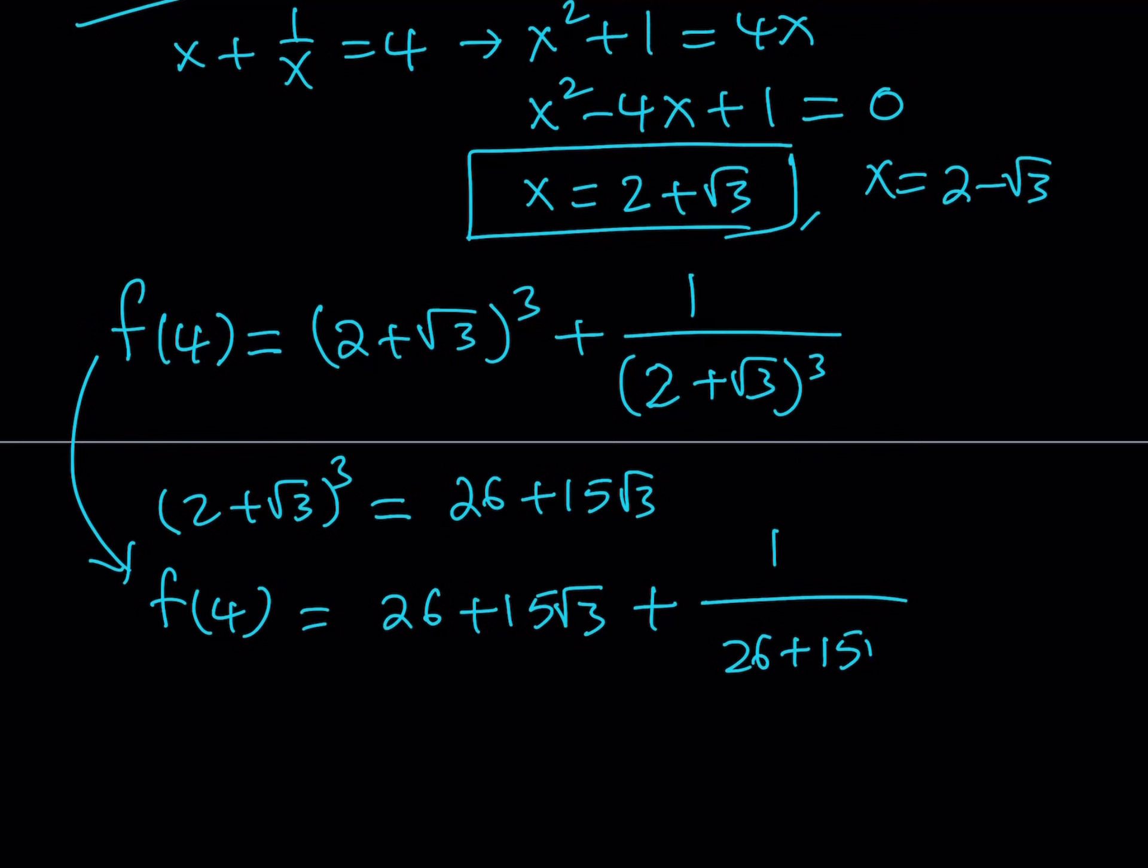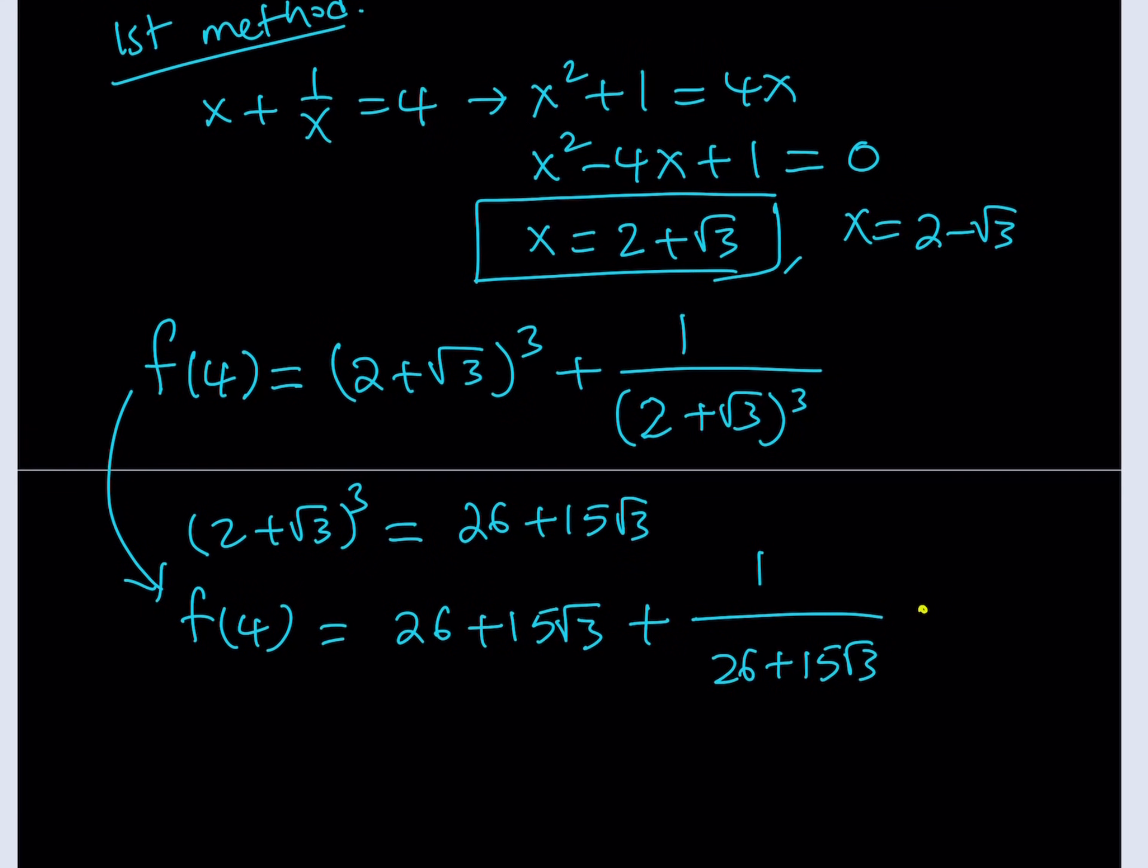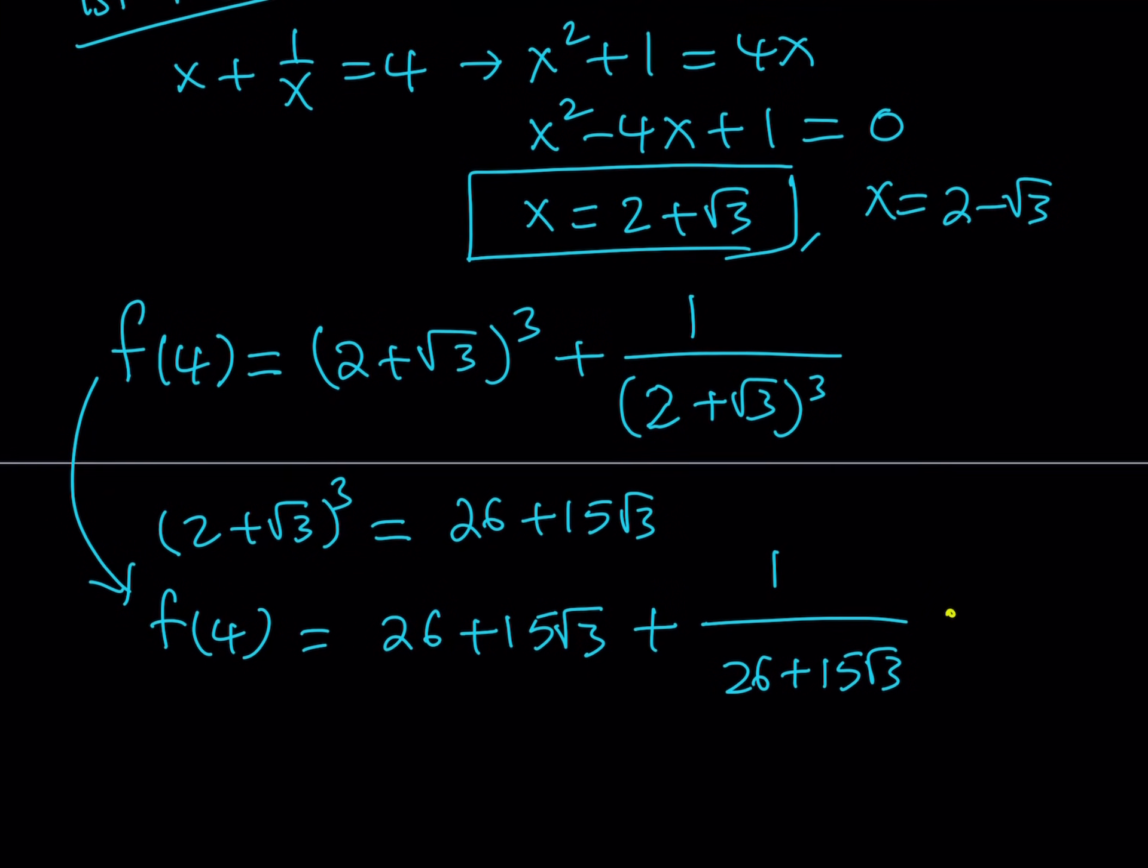And now at this point, we need to rationalize the denominator. Let's go ahead and multiply by the conjugate, which is 26 minus 15 root 3, both the top and the bottom. And when you multiply these, you're going to get something interesting.